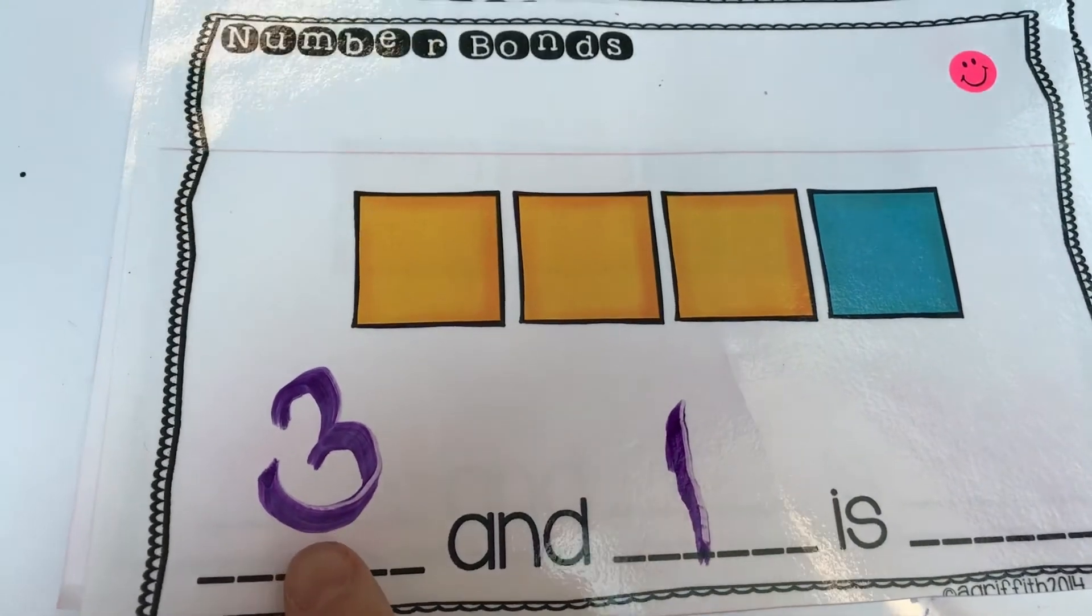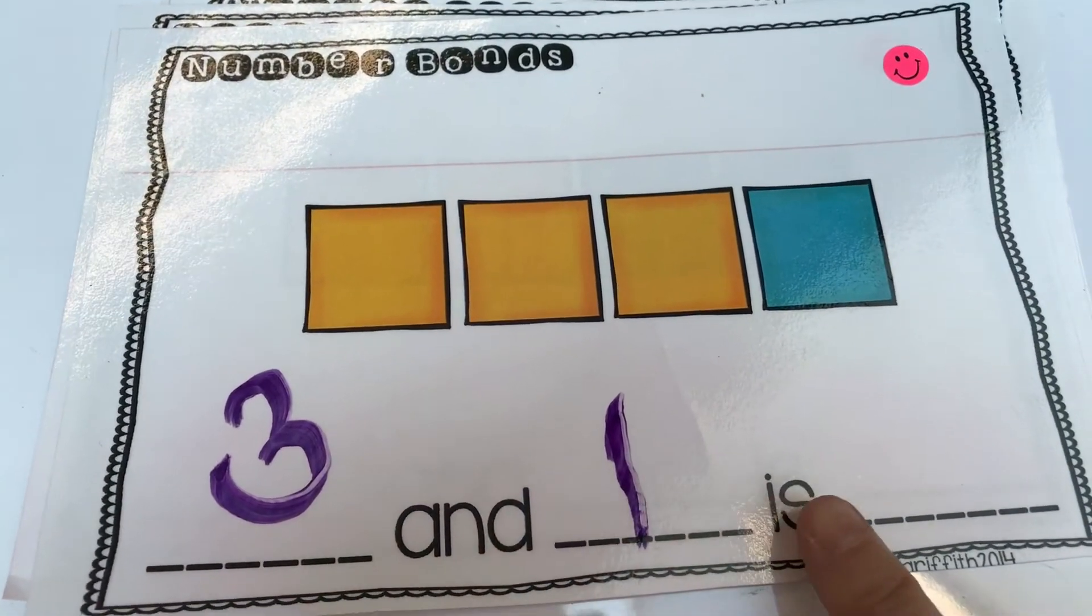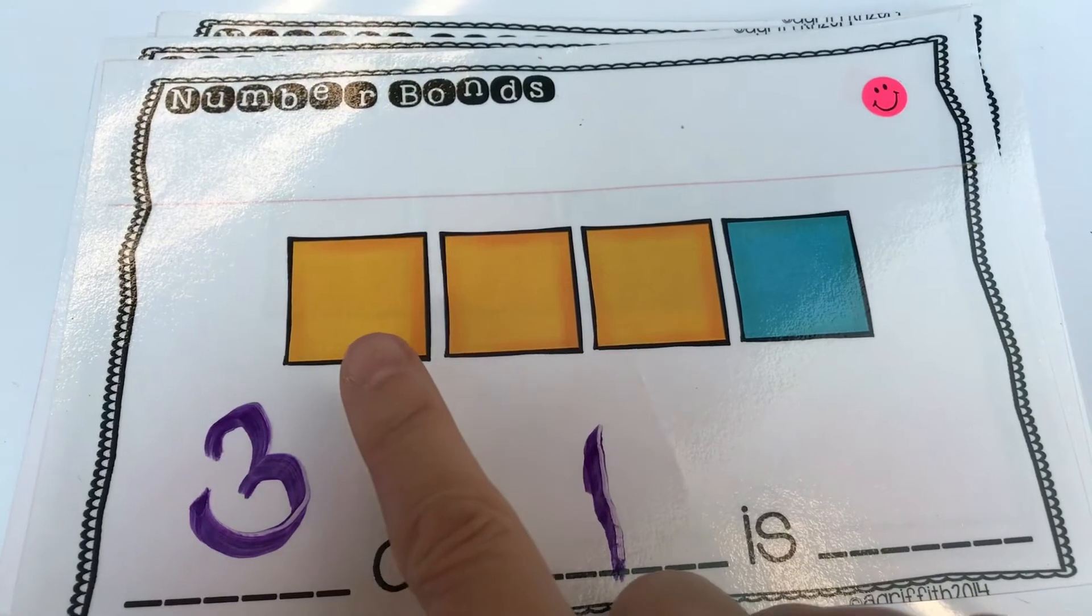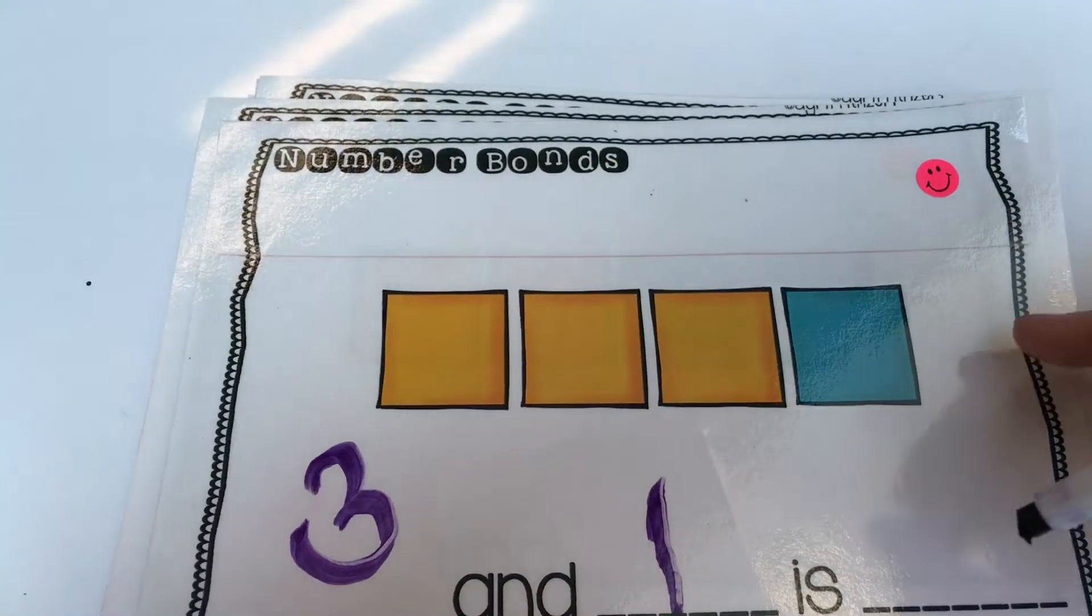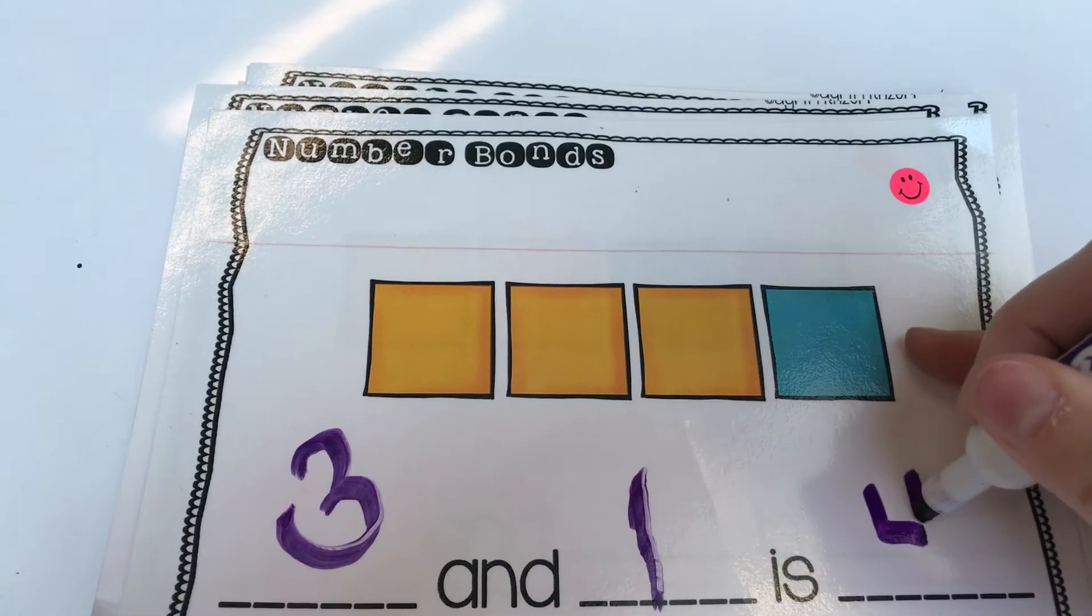So let's read this. Three and one is how many all together? One, two, three, four. So then you're going to write the number four.